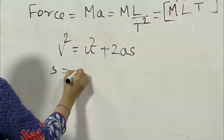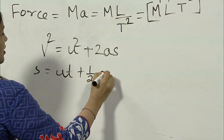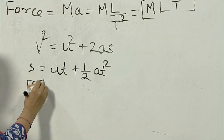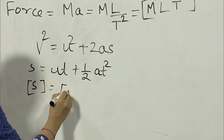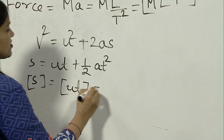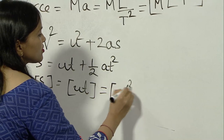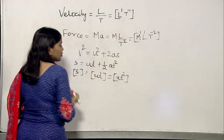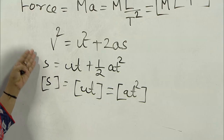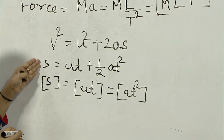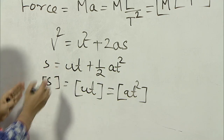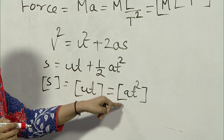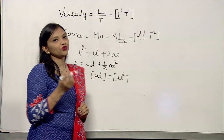Suppose S equal to ut plus half at square. Here in this case, the dimension of S must be equal to the dimensions of ut, which is equal to the dimensions of at square. We have written at square only because the number that is half has no dimensions. So the principle of homogeneity of dimensions says the dimensions of all the terms in an equation or formula must be equal.